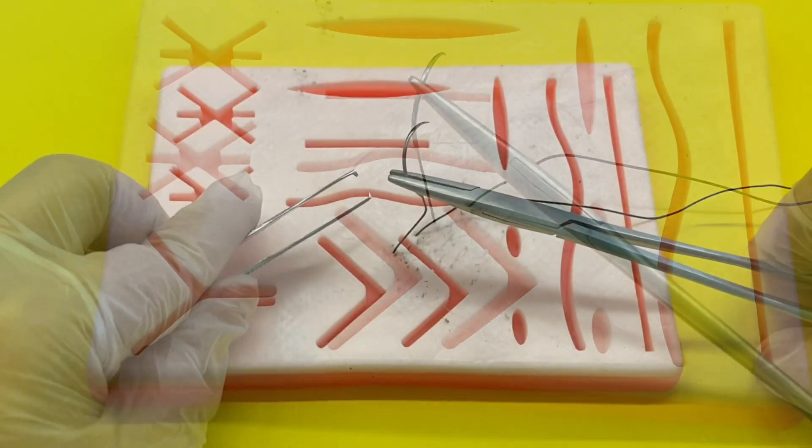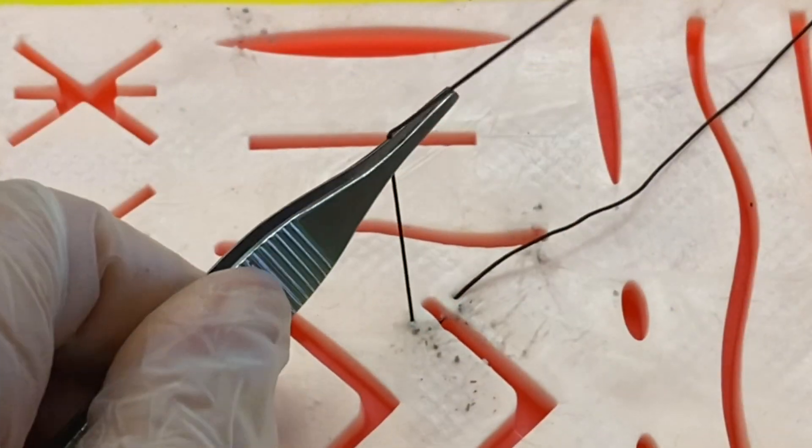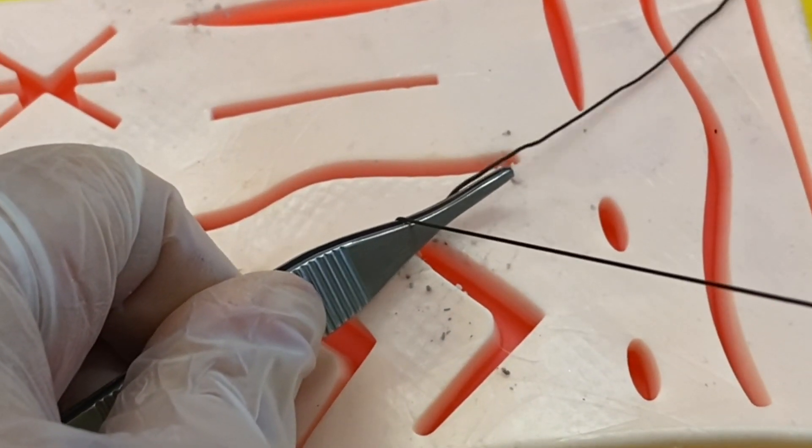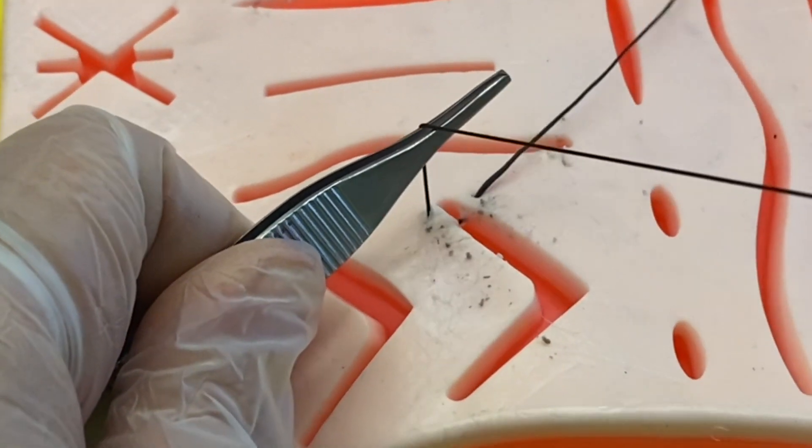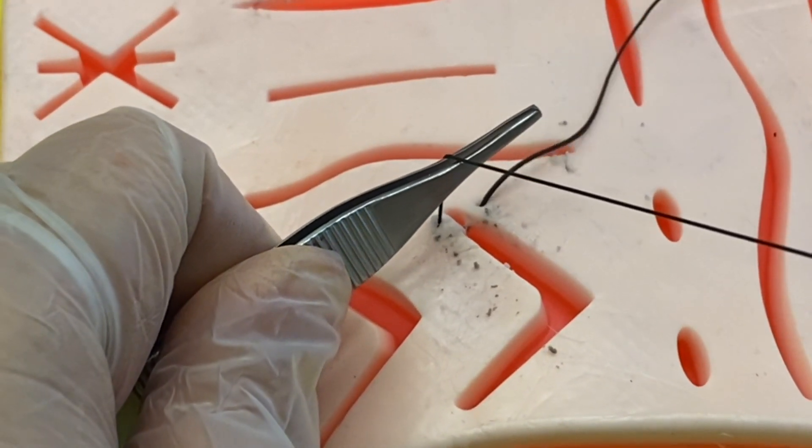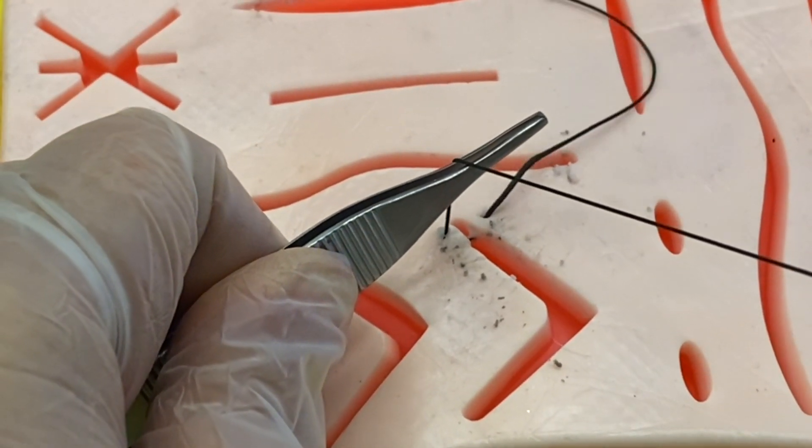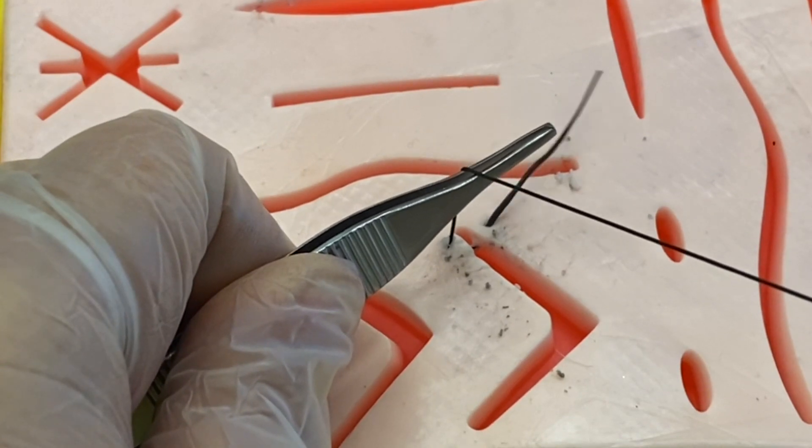Now because this is practice, you're going to be pulling a lot of string. Normally when somebody's getting stitches, it's not this long, but we want to be able to use this multiple times. So you can use the tweezers to help you pull the string all the way to the end, leaving just a little bit left.